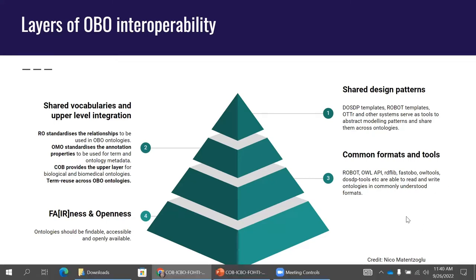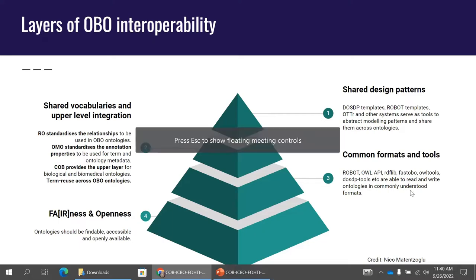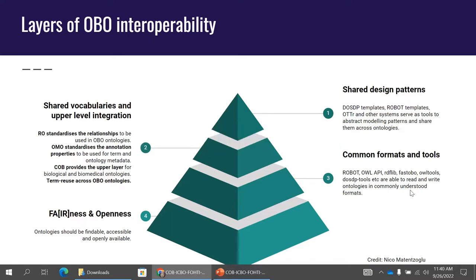At the top of the pyramid when we're thinking about ontologies, we've got our shared design patterns — our ROBOT templates, our DOSDP templates, whatever your favourite system is. There's also OTTR, which is another ontology design pattern system. Then at the layer below that, we've got the vocabularies and ontologies that are shared across all of the different ontologies.